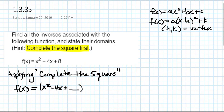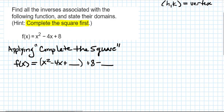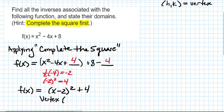We find a number to add to make a perfect square trinomial, and then subtract that same value so we're not changing the overall value of the function. We take half the coefficient of x — which is negative 4 — giving negative 2, then square it to get positive 4. We factor this into x minus 2 squared, plus 8 minus 4, which is plus 4. So now we have vertex form, and the vertex is the point 2, 4.